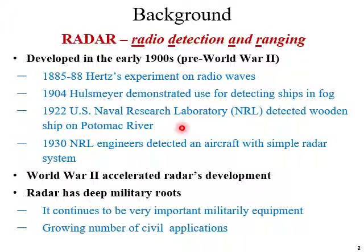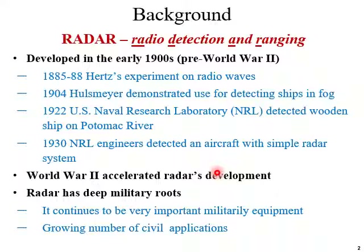Scientists measured the height of the ionosphere, and a lot of experiments were done. In 1930, military engineers detected an aircraft with a simple radar system, because at that time, aircraft had become one of the major and important equipment for the battlefield. Just before World War II, a lot of other inventions were done, and people developed magnetron type tubes that can generate a huge amount of RF power in the microwave region.